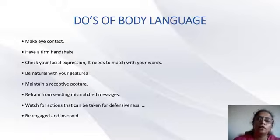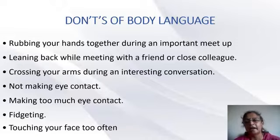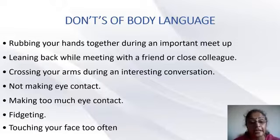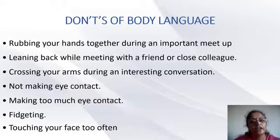These are some of the do's of good body language. The don'ts include: rubbing your hands together during an important meeting; leaning back and looking here and there; crossing your arms during an important conversation, which shows a very casual attitude; not making eye contact; making too much eye contact — just staring without blinking; fidgeting with your mobile, bag, or things on the table; and touching your face too often. These are some of the don'ts of body language.